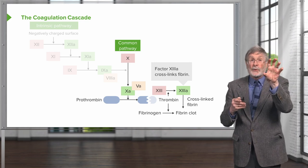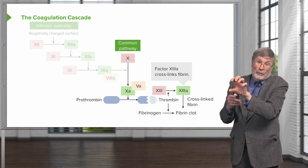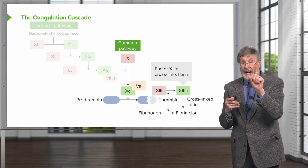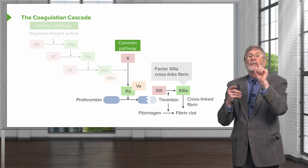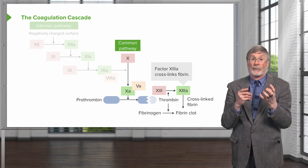So we've done the intrinsic pathway into the common pathway into the final pathway where we're getting fibrinogen, factor 1, to become factor 1a. And then we cross-link it. That's the intrinsic pathway.